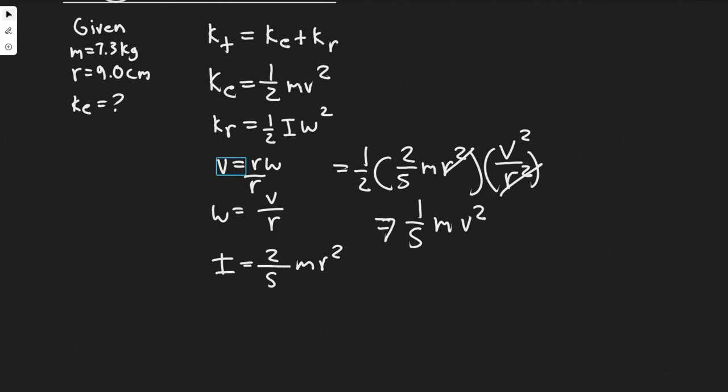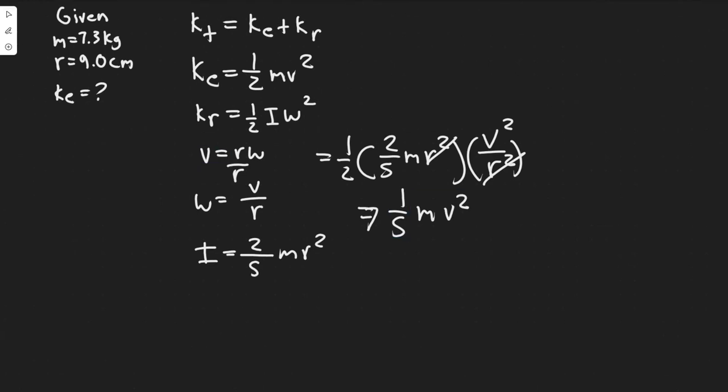So for this bowling ball, the rotational kinetic energy equals 1 fifth mass times the velocity squared. Now we have the normal kinetic energy and the rotational.